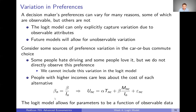The way we can do this is really simple. If we plug this into our model, it's equivalent to saying: instead of putting cost into our model, if we divide cost by income, we're effectively letting the preference for cost vary with income in the format we have on the left hand side. So as long as these parameter differences or preference variations are related to some observable data, we can just directly plug them into our model.